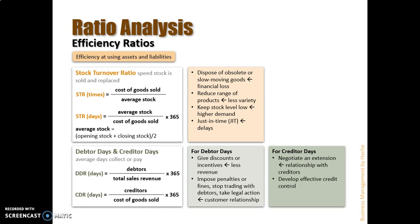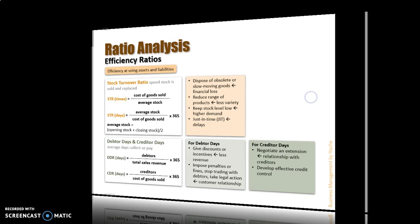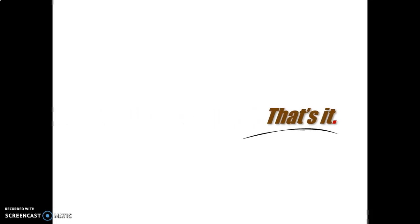These are all four efficiency ratios. Remember, the first is for both standard and higher level, and the last three are for higher level only. That's it for chapters 3.5 and 3.6. Bye-bye.